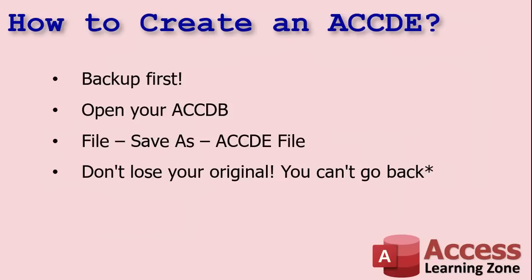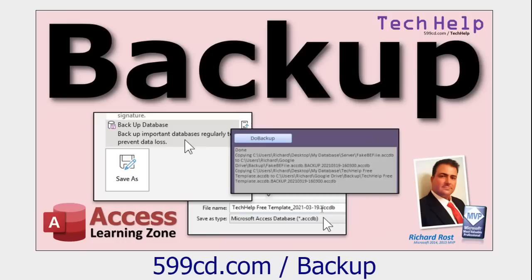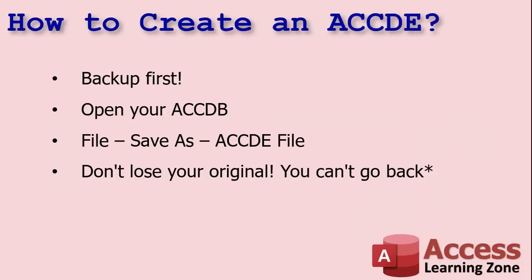So how do you create an ACCDE file? It's real simple. First, you're going to back up your database. Proper database backup is very important — even if you have a nightly backup, don't rely on it before you make your ACCDE file. Make a manual copy of your full database file. Email it to yourself, or put it in a server folder somewhere, or put it on a floppy disk — remember those? But back up your file manually. Then open up your ACCDB file, go to File, Save As, and you'll see Save As an ACCDE file. Let me show you.